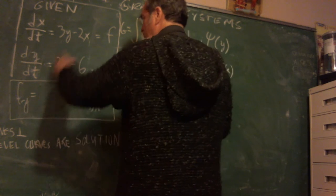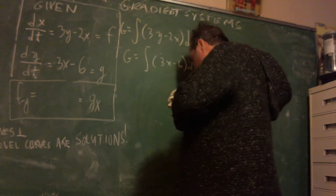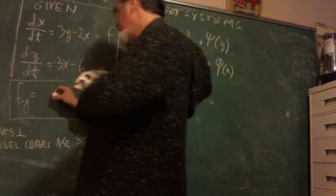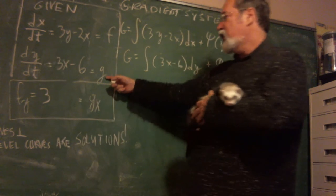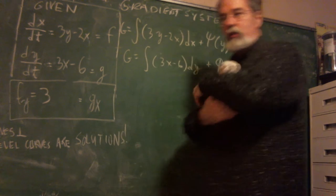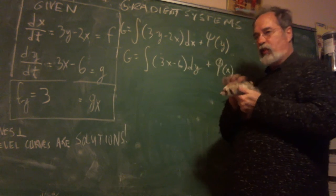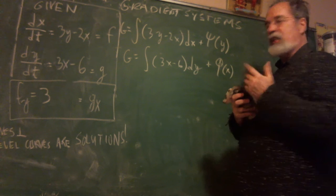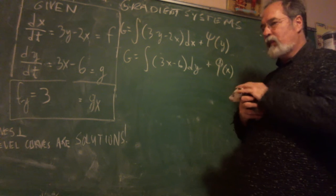So let's do the partial of f with respect to y. Well, that's going to be a 3. Let's do the partial of g with respect to x. And that's going to be a 3. So the check works. We get the same thing for those two partial derivatives. This time it's not a 0, no big deal. But we got it.